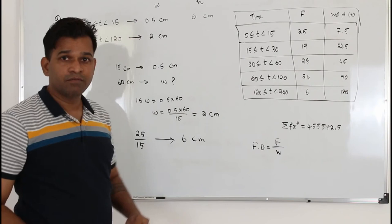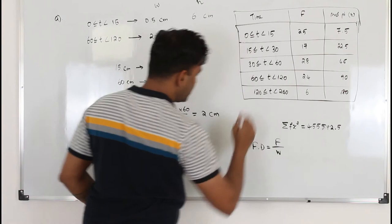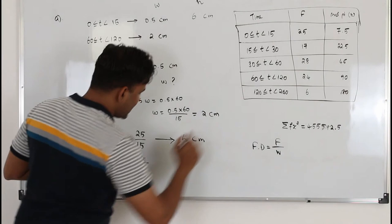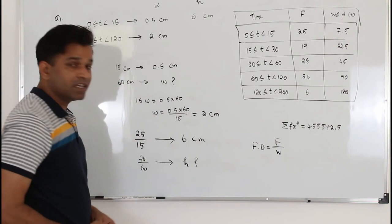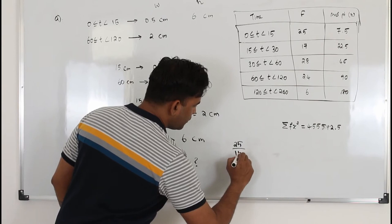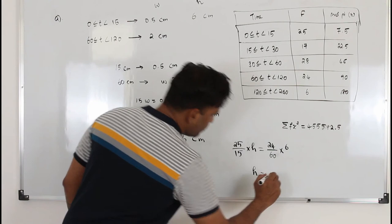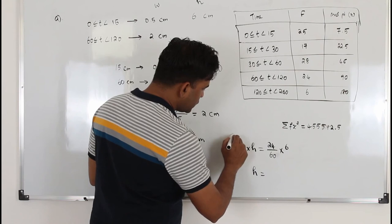For the 60 to 120 interval, the frequency density is the frequency divided by the class width — that is 24 divided by 60. We know that 25 over 15 corresponds to 6 centimeters. We set up the proportion and cross-multiply: H times (25 divided by 15) equals 6 times (24 divided by 60), so we solve for H.